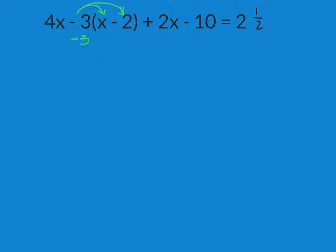Negative 3 times x minus negative 3 times 2. Negative 3 times x is negative 3x, minus negative 3 times 2 is negative 6, minus a minus of course is a plus 6. And bring down the rest of the problem that we left behind.